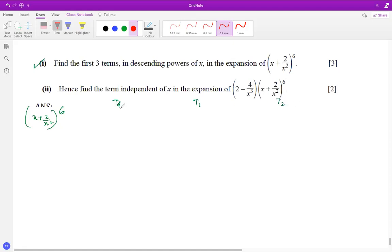For T1, plug in r equals 0, so it'll be 6C0 times x to the power 6 minus 0 times 2 by x squared to the power 0. 6C0 is 1 times x to the power 6, so my first term is x to the power 6.